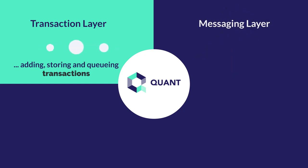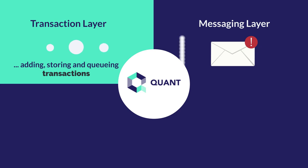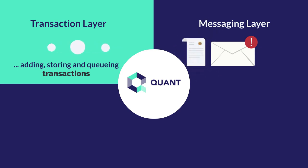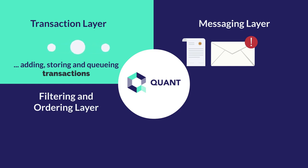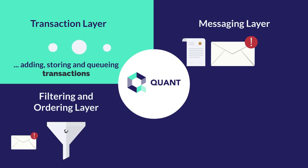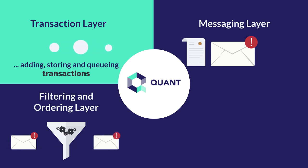Number two, the messaging layer, or the layer responsible for crucial information such as smart contract data or metadata. Number three, the filtering and ordering layer also has a name that speaks for itself, with messages referenced for one multi-chain application or another filtered, ordered, and checked for validity in terms of meeting requirements. Think of it as each multi-chain application kind of having a virtual blockchain.